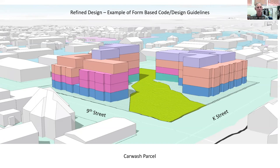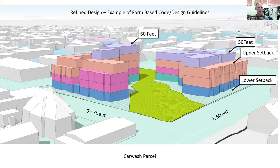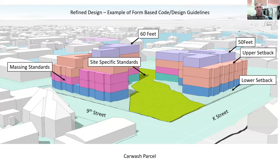This is to help us understand how we can further refine with form-based code. In this image, we have a 50-to-60-foot building, with the 60-foot portion further to the south of the parcels, which limits shading impacts. We can use these concepts and standards in the form-based code to ameliorate those impacts. You can see upper floor setbacks above three stories, as well as lower floor setbacks — some of which can be used for public purposes. There's some articulation of the building form to affect massing, plus site-specific standards — for example, this car wash site has real potential to allow for daylighting of a creek.